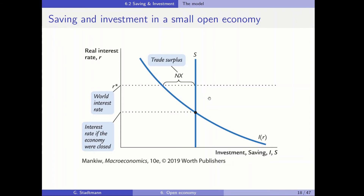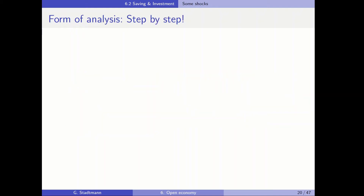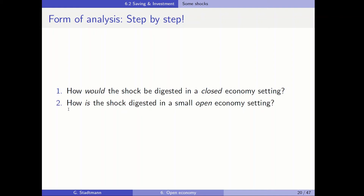Now that we have rolled out the model, we can use it to analyze three scenarios: what happens if the domestic government increases spending or decreases taxes; what happens if the world interest rate increases, perhaps because a foreign government increases spending; and what happens if the autonomous component of investment increases, shifting the investment function. We compare each shock in a closed economy versus a small open economy.